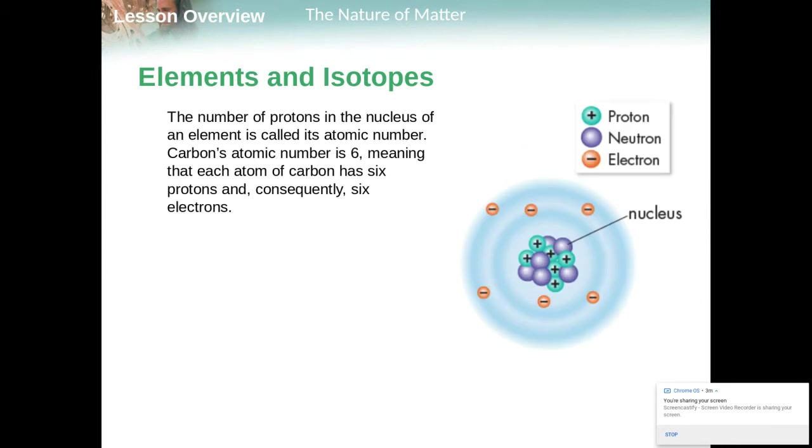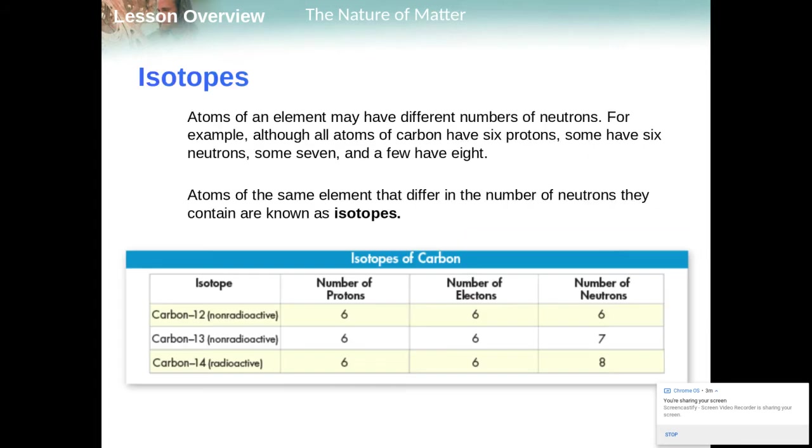The number of protons in the nucleus of an element is called its atomic number. Make sure you highlight that. That's going to be really important to know. Carbon's atomic number is 6. And what that means is that each atom of carbon has 6 protons, and because it's neutral has 6 electrons as well.